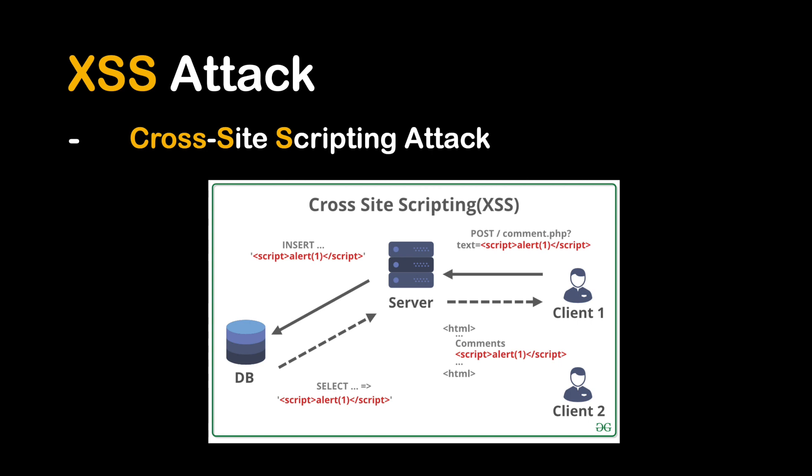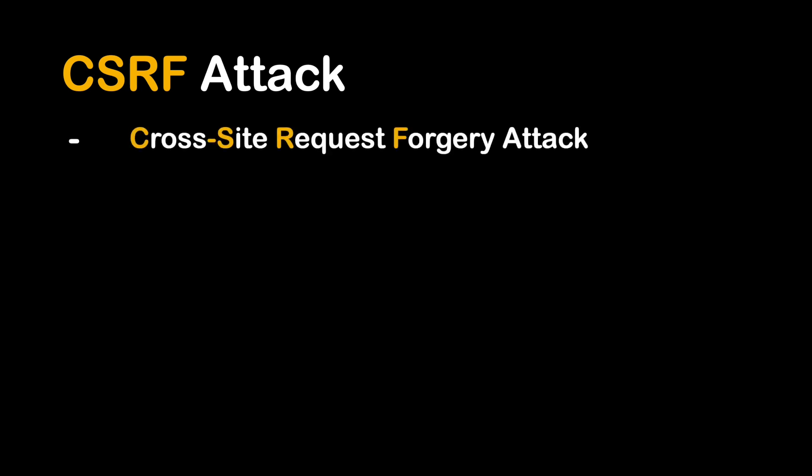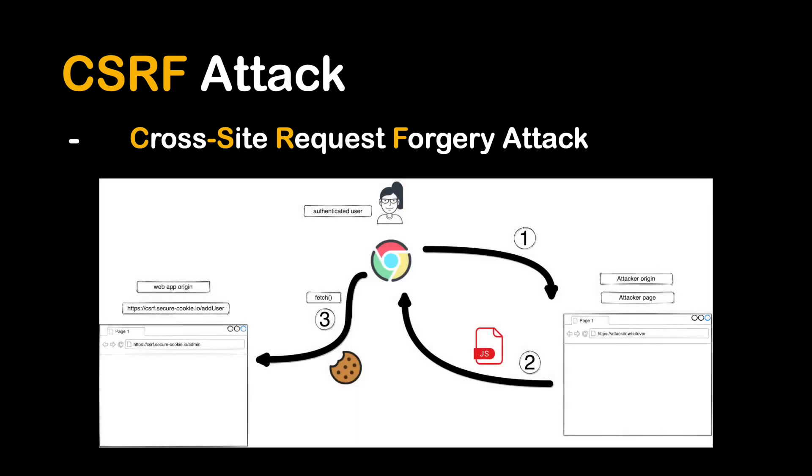By getting your JWT token, an attacker can easily impersonate you and make requests to the application server. On the other hand, cookies are vulnerable to CSRF attacks — also known as cross-site request forgery attacks. Because browsers automatically send cookies with all requests, CSRF attacks make use of this to gain authenticated access to a trusted site.